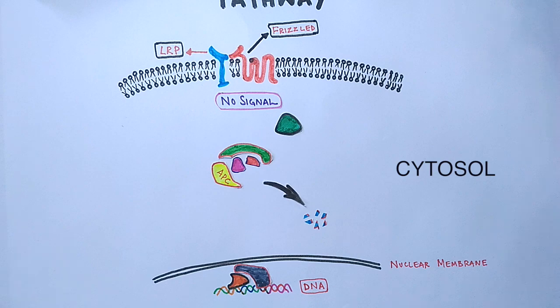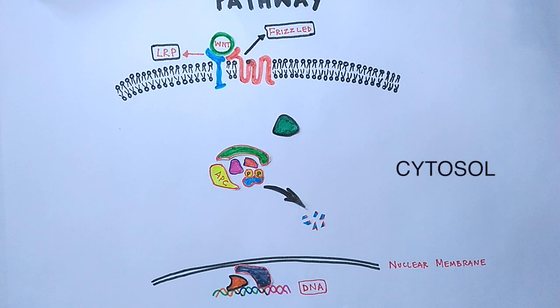Now let's see when there is presence of WNT signal. At that time, WNT protein comes in and transduces the signal towards the internal components of pathway via LRP and Frizzled receptors.